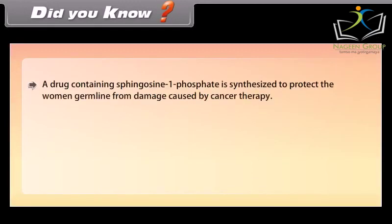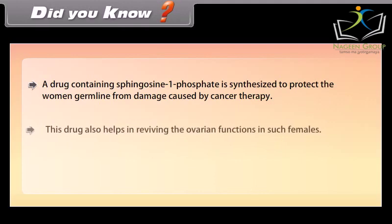Did you know? A drug containing sphingosine-1-phosphate is synthesized to protect the women's germline from damage caused by cancer therapy. This drug also helps in reviving the ovarian functions in such females.